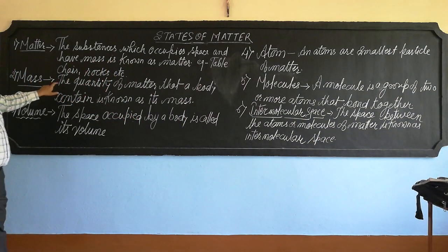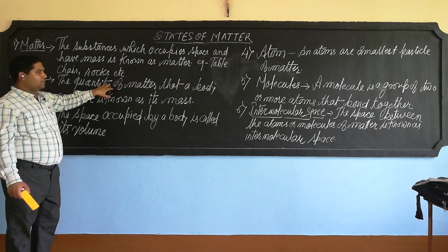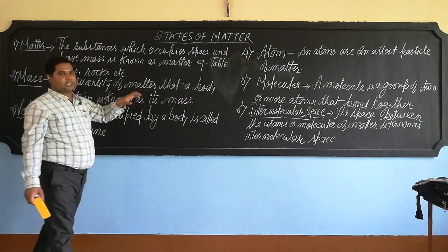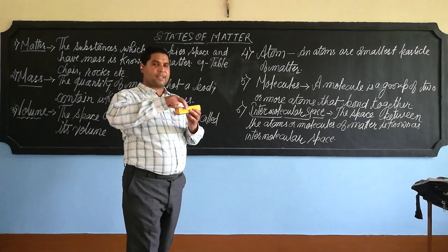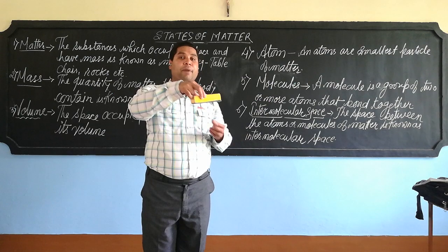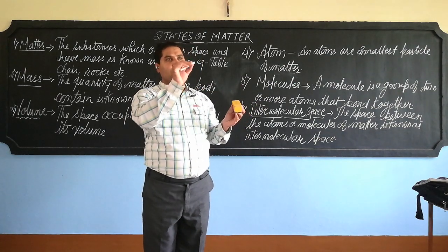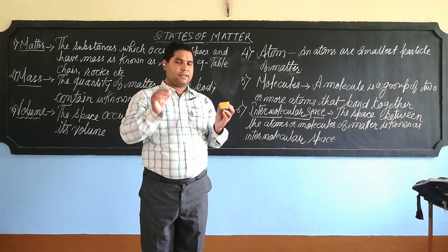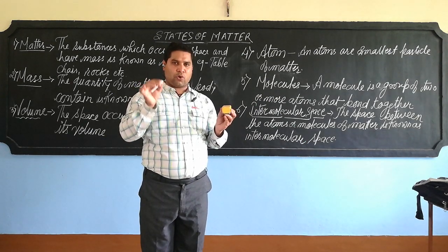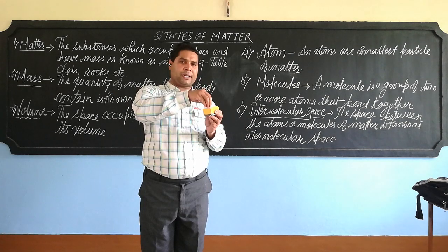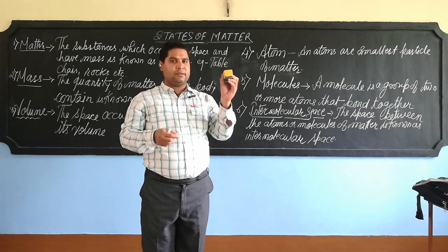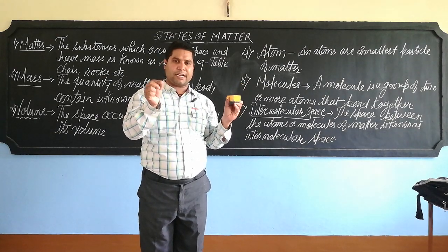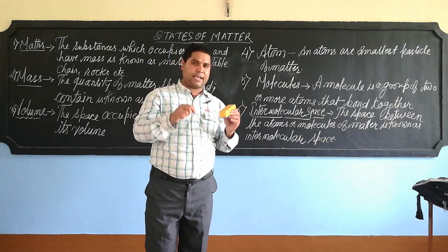The next term is mass. What do you mean by mass? The quantity of matter that a body contains is known as its mass. When an object is kept on an electronic beam balance, you will see a reading of 200 grams or 300 grams — that reading represents the amount of material or quantity present in the body, and it is known as its mass.